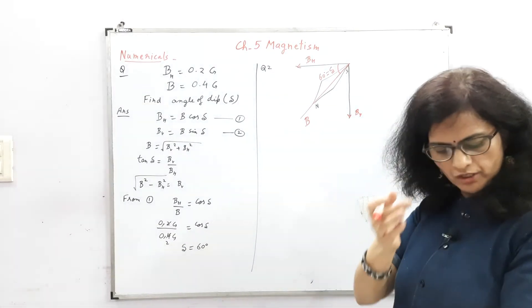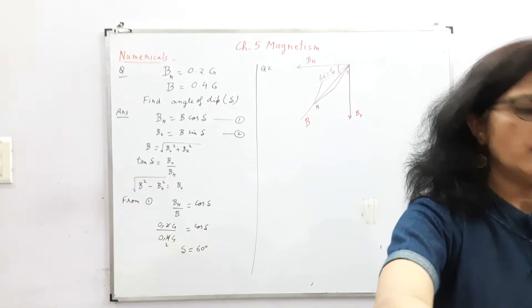This will be BH and this is the resultant magnetic field of earth. This will be BV. So this diagram is not given in the question.